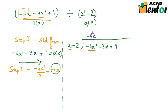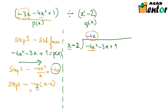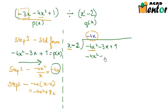Step 3 is to multiply the first term of the quotient by the entire divisor q(x). So minus 4x multiplied by x minus 2 gives minus 4x times x equals minus 4x squared, and minus 4x times minus 2 equals positive 8x. I write this result, minus 4x squared plus 8x, directly under the dividend.